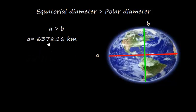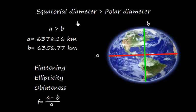The value of equatorial diameter is 6378.16 km and the polar diameter is 6356.77 km. We have a factor or parameter called flattening, ellipticity or oblateness which is given by this formula: F is equal to A minus B divided by A, in order to understand the shape.